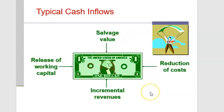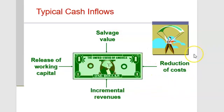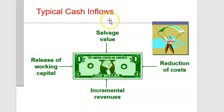On the cash inflow side, you think about what an asset is going to bring in — incremental revenue. Also consider cost reduction: if our existing vehicles get worse gas mileage and we buy a more energy-efficient one, that's a reduction of cost, which counts as a cash flow inflow in this model.